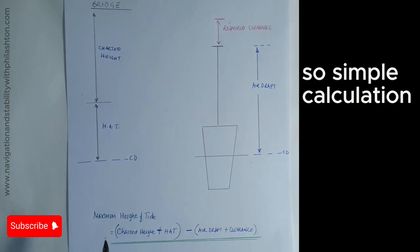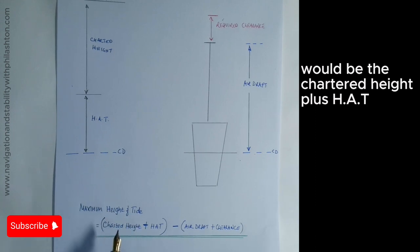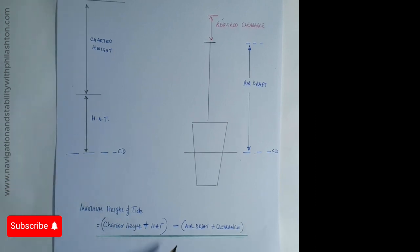So a simple calculation, the maximum height of tide would be the charted height plus HAT minus the air draft plus clearance.